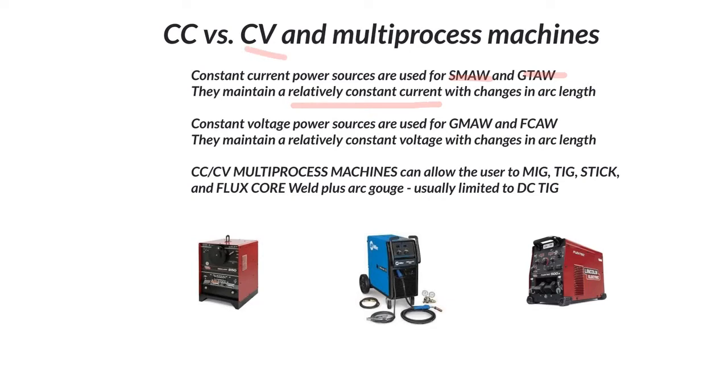Constant voltage, CV, are used for MIG and flux core welding and they maintain a relatively constant voltage. So we are either maintaining current amperage or voltage.